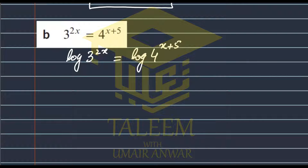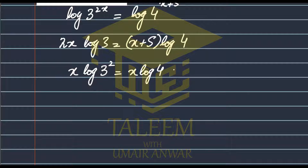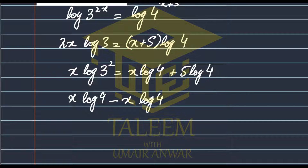On the left side, we have 2x as the coefficient of log 3. On the right side, we have x plus 5 times log 4. Expanding gives x times log of 3 squared, which equals x times log 4 plus 5 times log 4. Rearranging, we get x times log 9 minus x times log 4, equal to 5 times log 4.